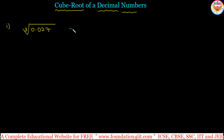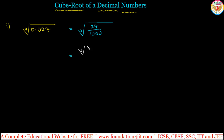Convert the given decimal number into a fraction. Cube root of 0.027 is the cube root of 27 by 1000, because after 3 decimal places, 27 by 1000 equals 0.027. Now, same as we did in the previous topic, we find the cube root of 27 divided by the cube root of 1000.